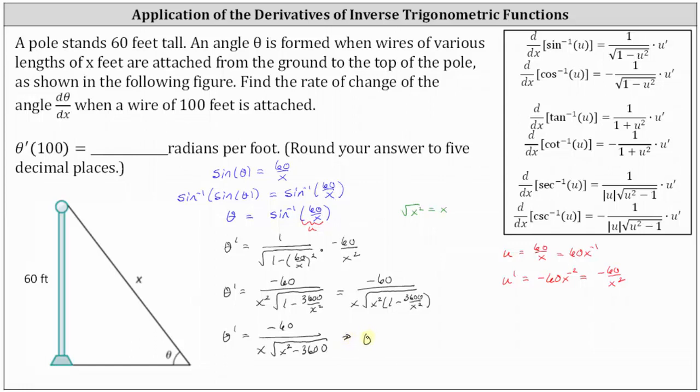So now we can determine θ'(100) by substituting 100 for x, which gives us -60/(100√(100² - 3600)).